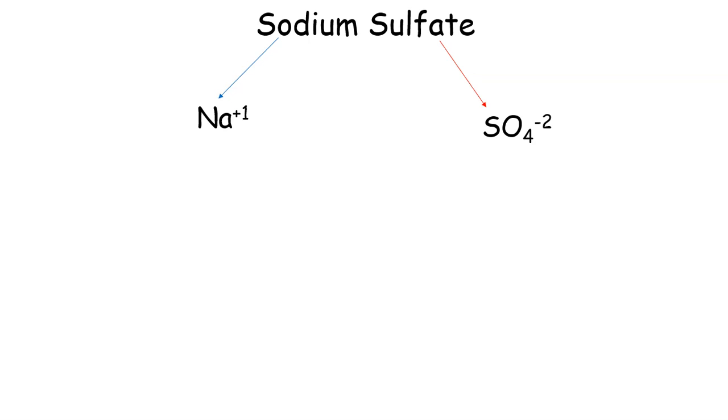The next step is we have to take both of these and figure out how many sodiums and SO4s we need. We want this to equal zero. We take the charge +1 and -2, and we add these together and we get -1. Your goal is for the compound to equal zero. Right now it doesn't. So I'm going to add another Na+1, because I want this to equal zero.